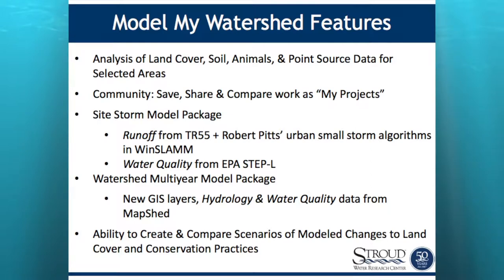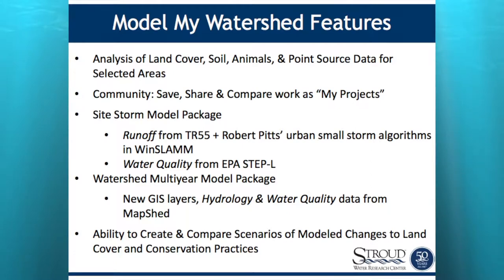There are two models embedded in Model My Watershed. The first is our Site Storm model — it's built off of the USGS hydrologic model. It takes a storm event, applies it over a 24-hour period, and tells you what's going to happen in an area of interest. It gives some basic water quality information using the EPA STEP-L model. The second is our watershed multi-year model, which is a regulatory-level, professional-grade water quality and hydrology model. This is where the real power is — watershed groups, organizations, even engineering firms can utilize this to assess impacts of land use change decisions.